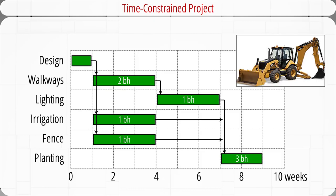I'll use an example to explain how to allocate resources for time-constrained projects. This botanic garden project uses only one type of resource called backholes — a combination of an excavator and a bulldozer. The project involves six activities. It starts with garden design, which takes one week, and doesn't need any heavy equipment yet.